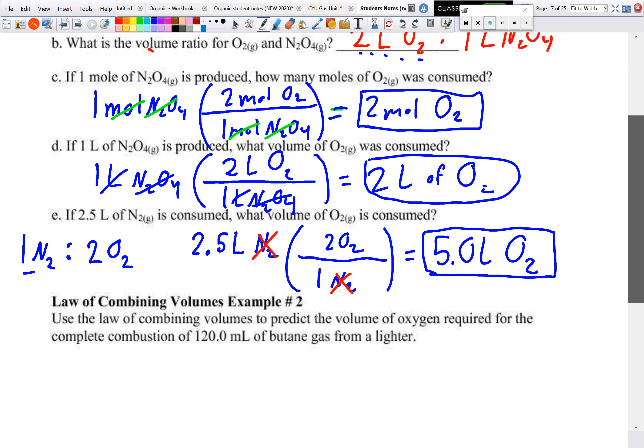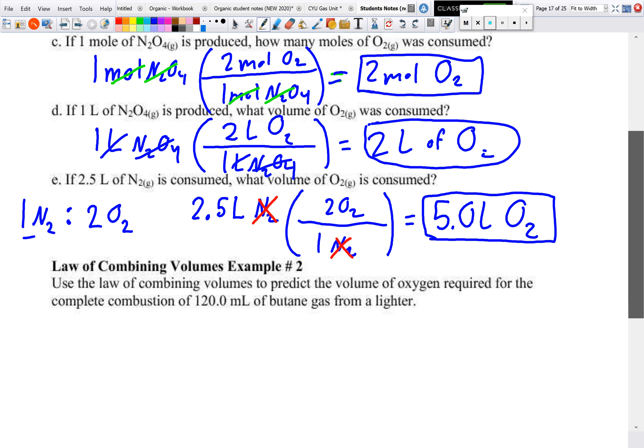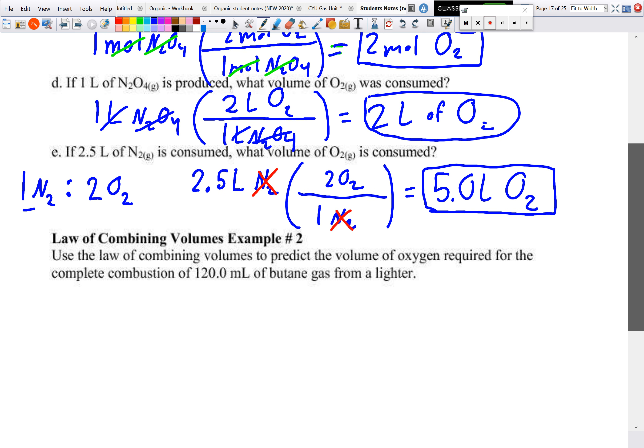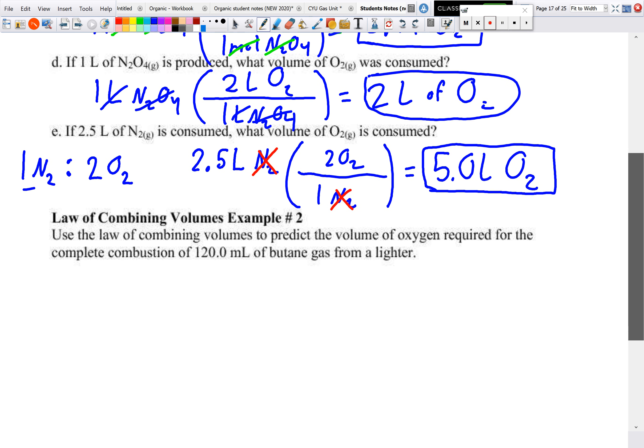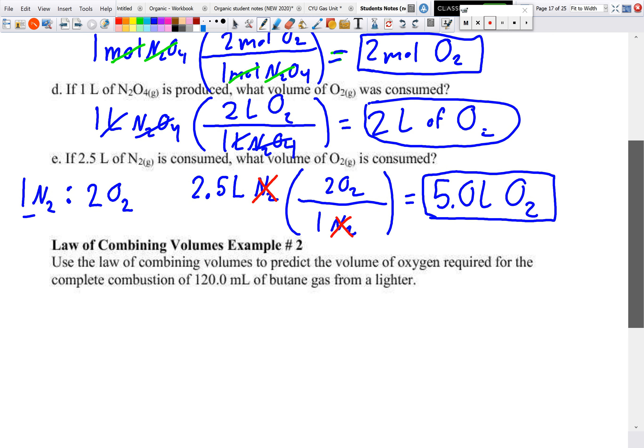So as you can tell, we need to have our balanced chemical equation first, and then we can apply that into any other example that we have. So our next one, this is more of a typical example that you guys are going to be expected to deal with, is that I don't give you the balanced chemical equation first, as you need to figure out what the chemical equation is, and then use the laws of combining volume, so once you get your balanced chemical reaction.